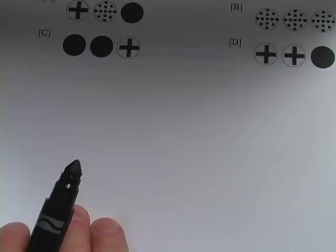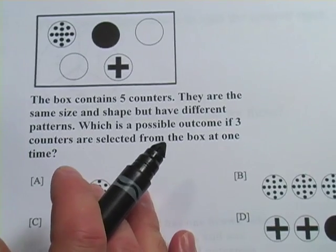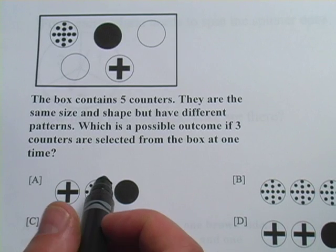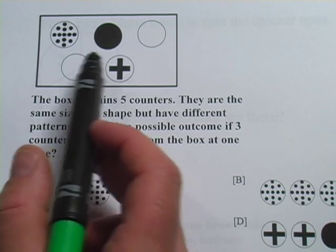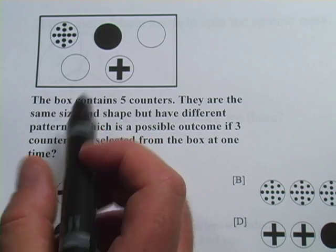Let's look at another one. In this problem, it says the box contains five counters. So there are little chips or disks or something in here, five of them, and they have different colors or patterns on them.